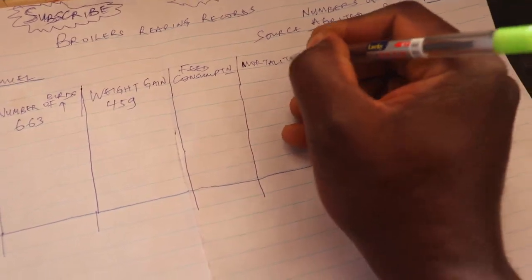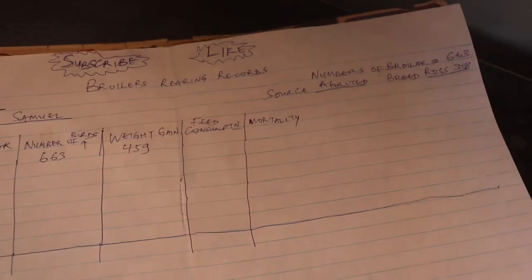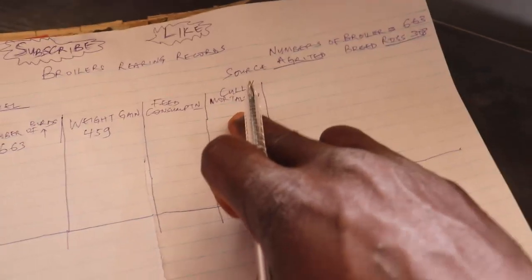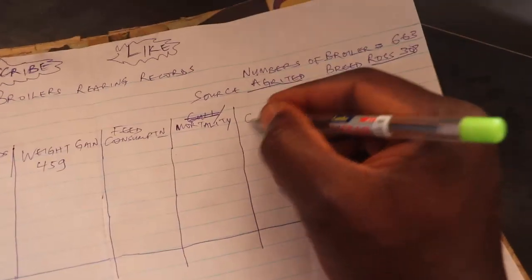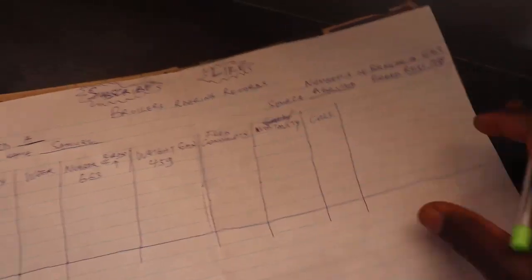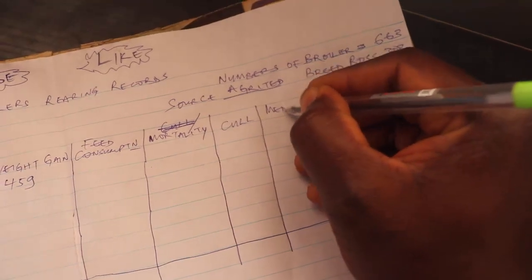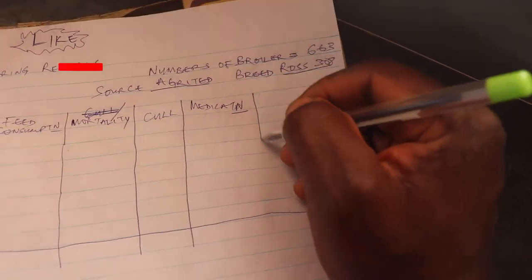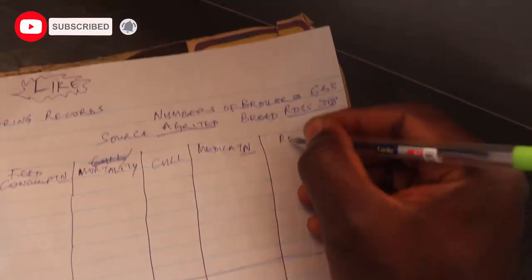After feed consumption, the next thing to consider is mortality — how many birds died. Then we have culls, which are sick birds you separate from the flock. A culled bird may recover and be reintroduced, so it doesn't permanently reduce the bird count; mortality, however, is no return. We also have a column for drug medications and vaccinations, and finally a remarks column for your observations and recommendations.